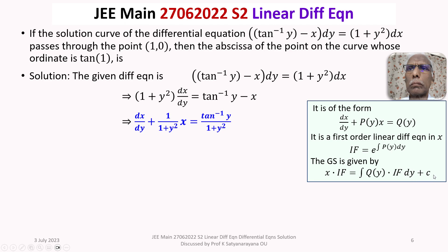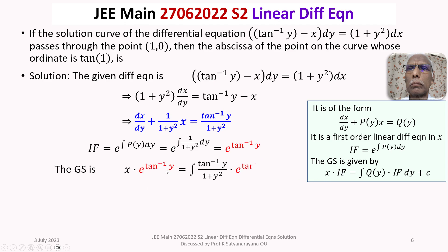The integrating factor is e to the power of the integral of P(y) dy, where P(y) is 1/(1 plus y squared). So this becomes e to the power of the integral of 1/(1 plus y squared) dy. Since that integral is tan inverse y, the integrating factor is e to the power of tan inverse y. The general solution is x times e to the power tan inverse y equals the integral of (tan inverse y divided by (1 plus y squared)) times e to the power tan inverse y, dy, plus c.